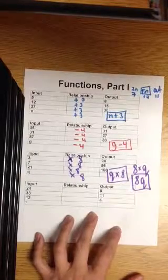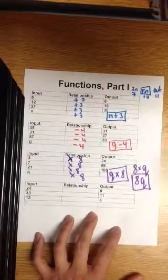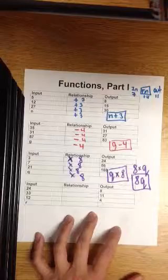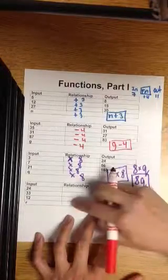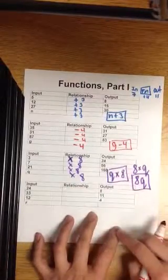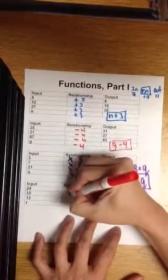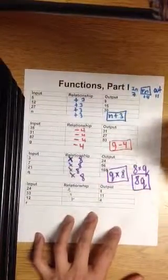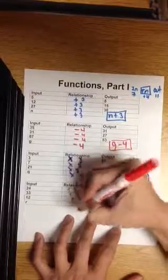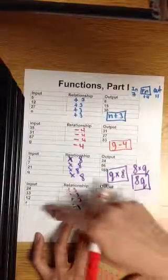And the last example. How do you turn a 24 to an 8? Smaller. 33 to 11. Smaller. 12 to 4. Is it minus 8? No, it doesn't work. I think it's division. Because it's getting really small. I think it's dividing by 3 for each one.